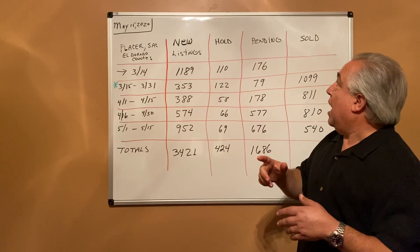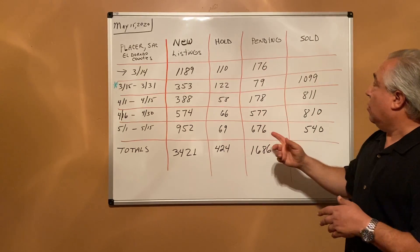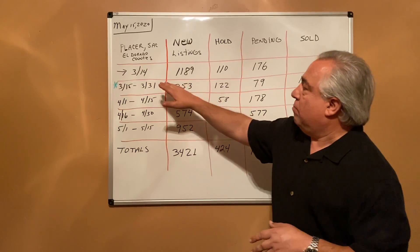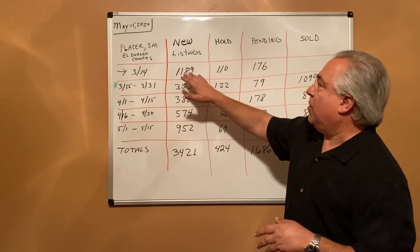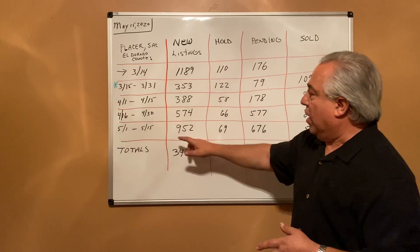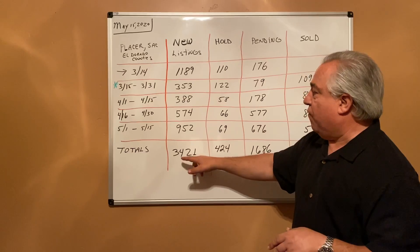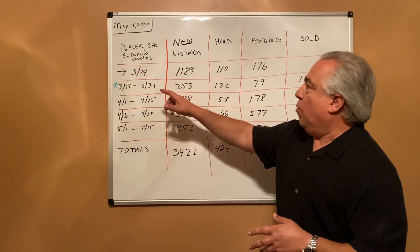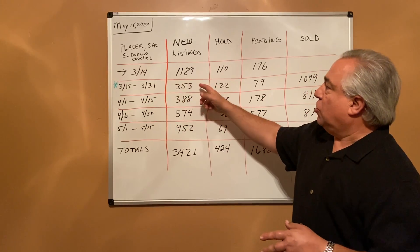Prior to March 14th we had 1,189 new listings come on the market for the year. Right now we have a total of 3,421 new listings active on the market. When the stay-at-home order went in place those first two weeks, it was 253, and then it went to 388.